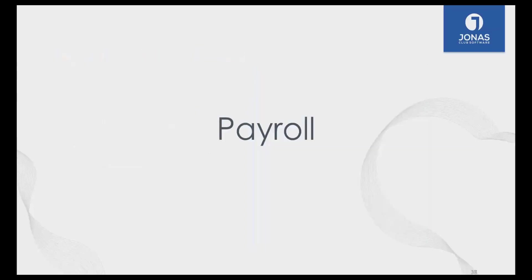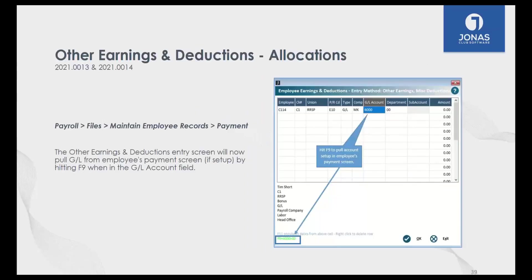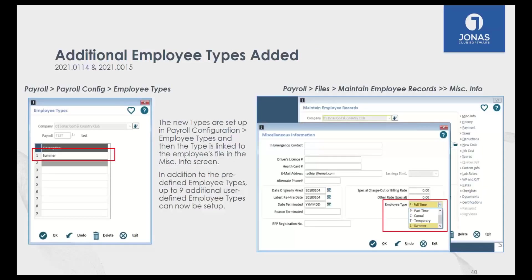Moving into the Payroll module — a couple more efficiencies added here. When entering deductions for employees, Jonas asks for a GL account. Now, to make it faster, you can hit F9 on your keyboard and that GL account will come in automatically. Which GL account comes in depends on what you've set up as the standard or default in that employee's payment screen or profile.